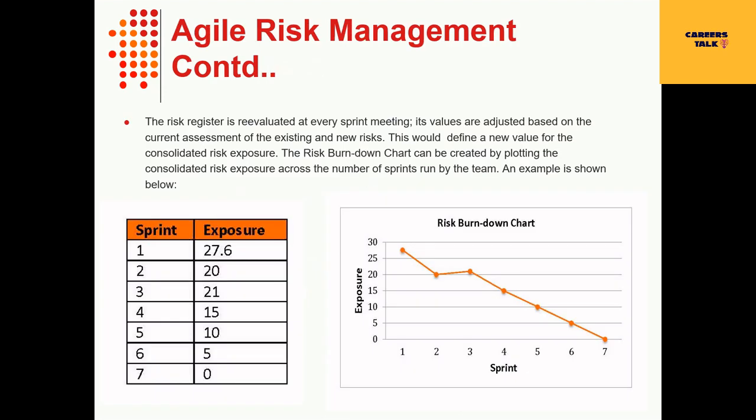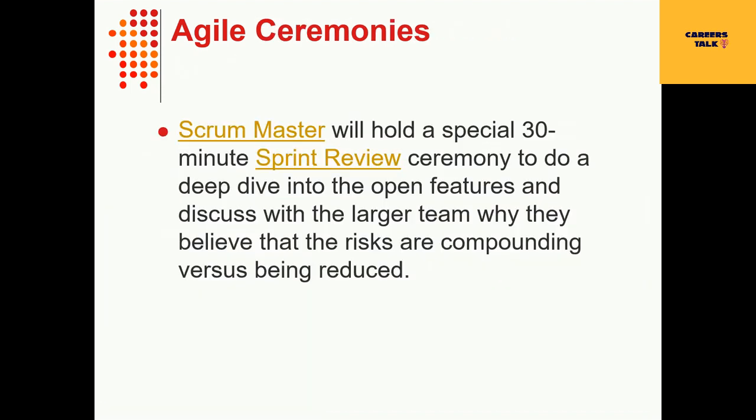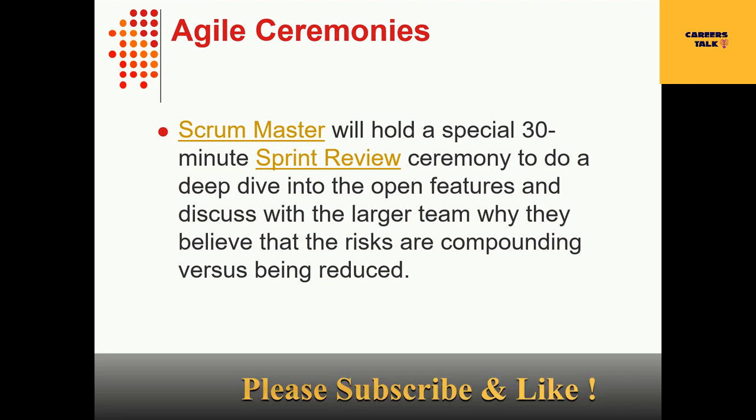The risk register is re-evaluated at every sprint meeting. Its values are adjusted based on the current assessment of existing and new risks. This defines a new value for the consolidated risk exposure. The risk burndown chart can be created by plotting the consolidated risk exposure across the number of sprints run by the team.